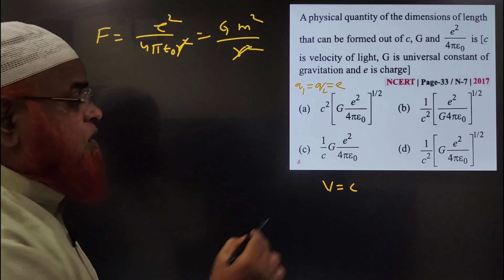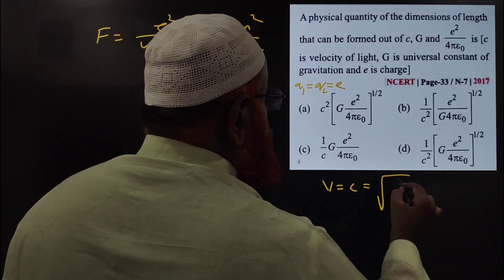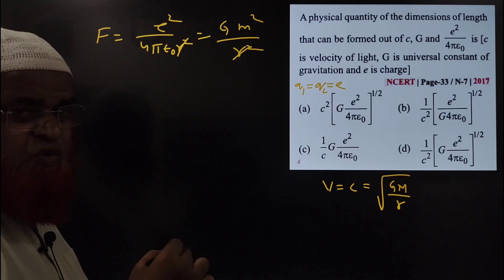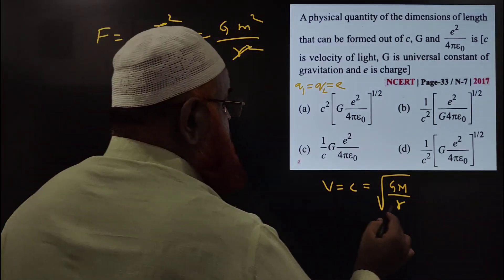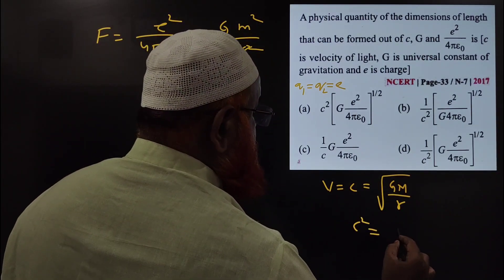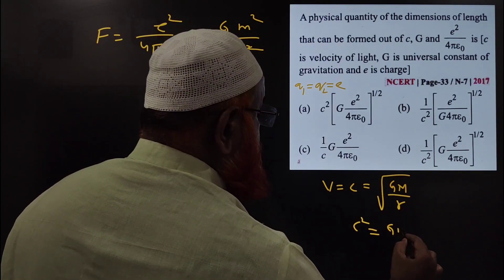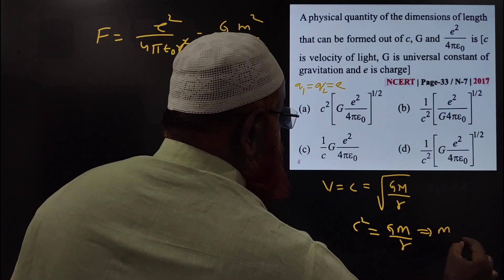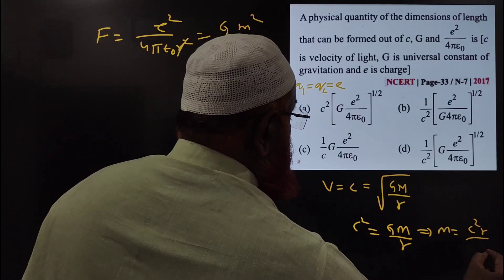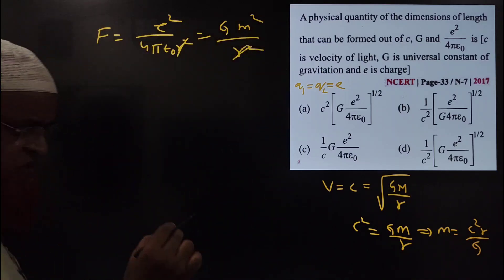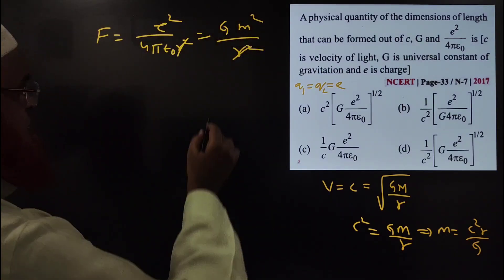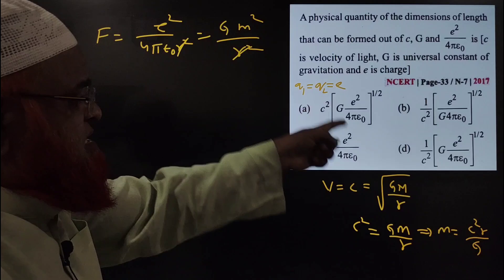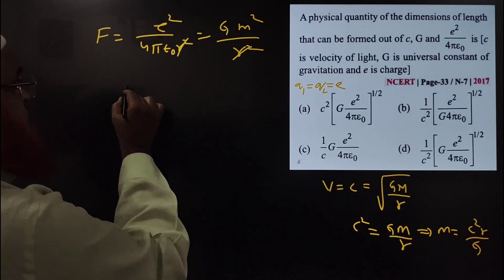You know that in terms of gravitation, velocity can be considered as square root of GM by R — that is the escape velocity formula. Squaring both sides, C² equals GM by R, which implies M equals C²·R by G. So M equals C²·R divided by G.